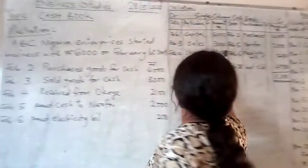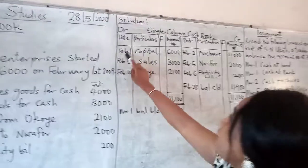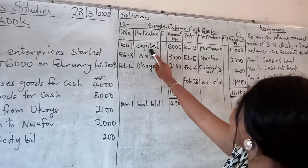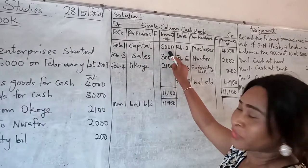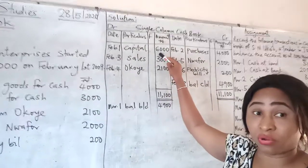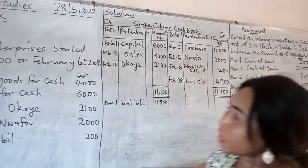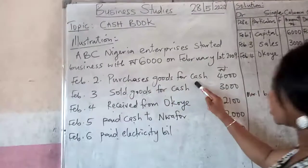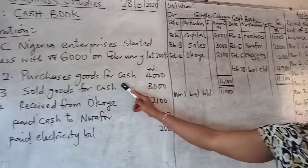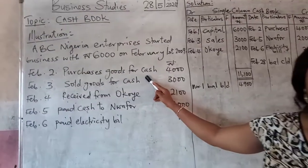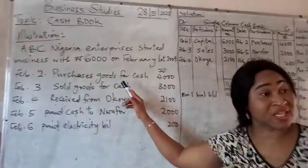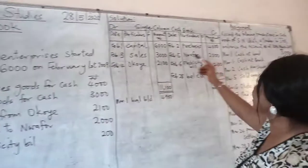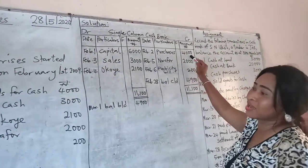Looking at the solution, you will see on 1st February, the money used in starting up a business — capital — 6,000 Naira. That money is with the business owner and it should be debited. Then on the 2nd, he purchases goods for sale. When he purchased these goods, he made payments, so it should be recorded on the credit side. Purchases: 4,000 Naira.